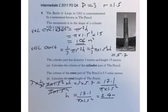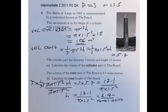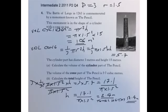So 2.4 metres is the height of the cone, plus the 15 metres for the cylinder part, gives the total height of the pencil. Adding these two together: 2.4 metres plus 15 metres for the cylindrical part gives a total of 17.4 metres. That's our total height and our final answer.